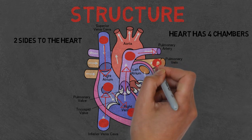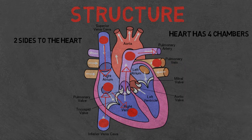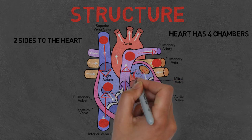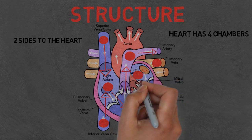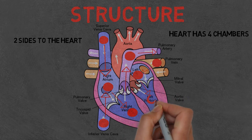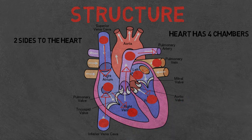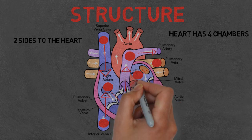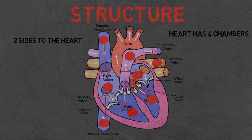The blood enters back into the heart through the pulmonary vein where it is then pumped into the left atrium, then into the left ventricle. The left ventricle is the strongest of all the chambers and its job is to pump the blood into the aorta where it can then circulate throughout the whole body. Fun fact: it takes the blood 20 to 30 seconds to make a round trip of your whole body.